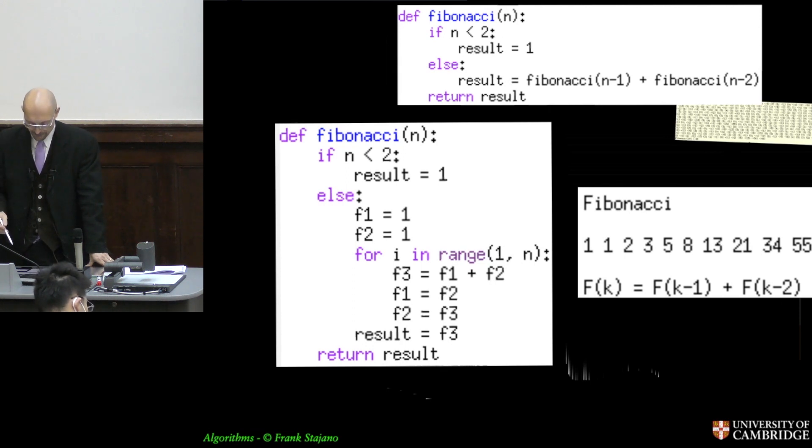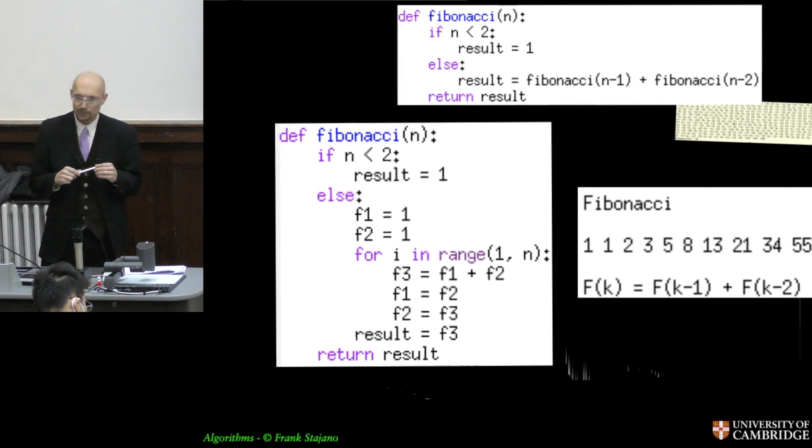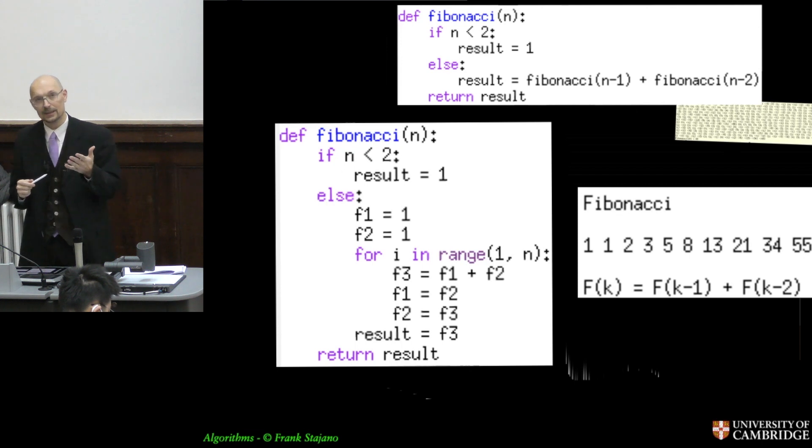So this is called memoization, not memorization, memoization. And it's a technique for rescuing these otherwise pathetically inefficient recursive formulations of these problems. So dynamic programming - this is not dynamic programming, but dynamic programming is a technique that can be used to tackle problems where there is this feature that the optimal solution to the big problem involves optimal solutions to smaller problems which overlap and which, if you did in the regular brute force or top-down way, you would end up recomputing many times. The same problems would be recomputed so many times. So memoization is a technique whereby each component problem is only computed once, and so you save yourself from falling into that trap.